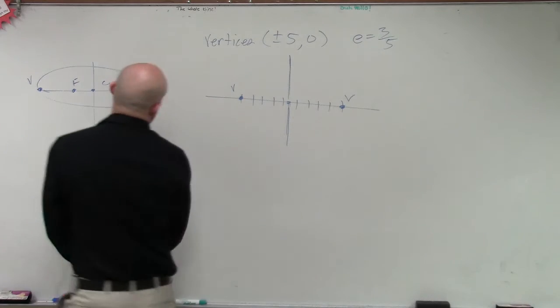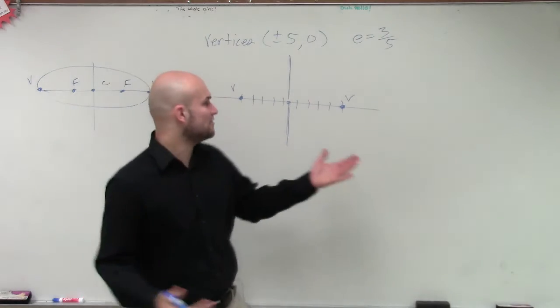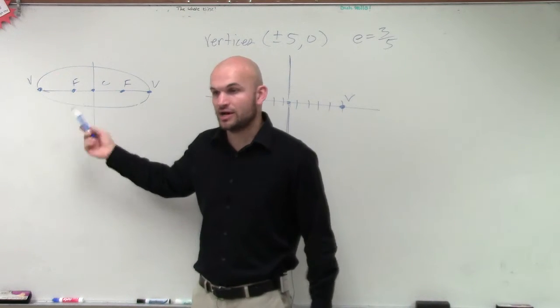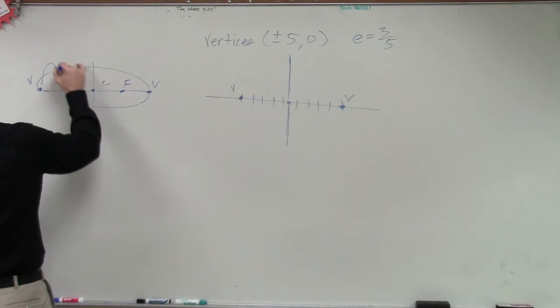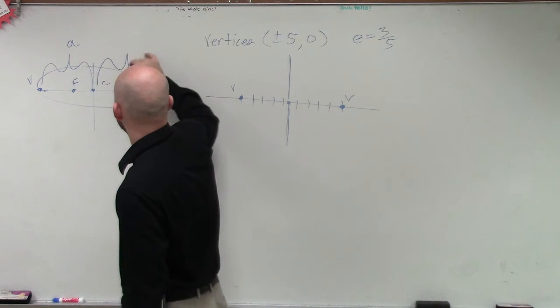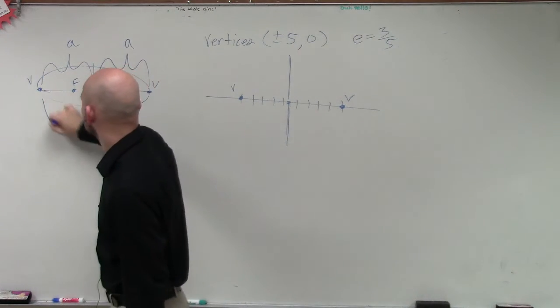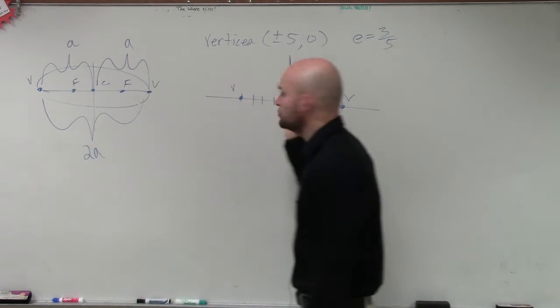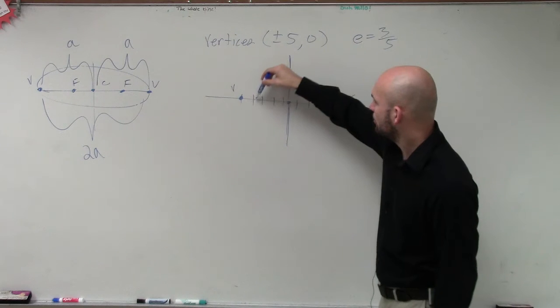So we have our vertices. Now remember, on our vertices, the center is exactly in between them, because the distance from here to here is a. So this whole distance is what we call 2a. So what does 2a equal? Well, let's count.